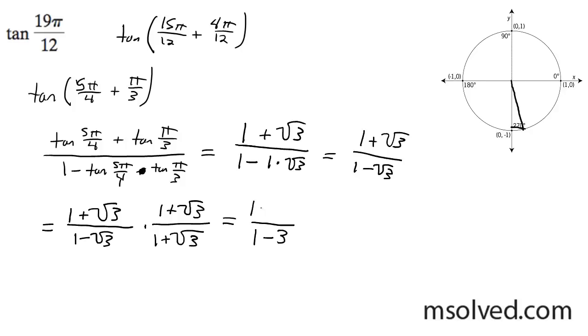And then I get 1 plus, on the top, 1 plus root 3 plus root 3 plus 3. So I'm going to get negative 2, and on top I'm going to get 4 plus 2 root 3.